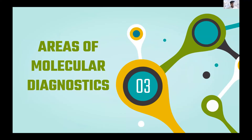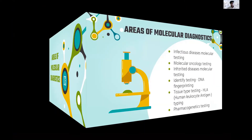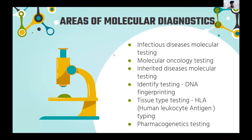Areas of molecular diagnosis — I'm sure everyone is concerned about career options after completing MSc or BSc. Molecular diagnostics has very vast areas you can work in. These include infectious disease molecular testing, molecular oncology testing for cancer research, inherited disease molecular testing, DNA fingerprinting, HLA typing for tissue transplant or transplantation, and pharmacogenetics testing — the latest area, used to study drugs or design a designer drug for a specific patient.